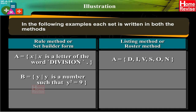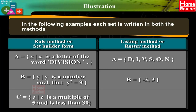In set builder form: B = {y : y² = 9}. In listing method: B = {−3, 3}. In set builder form: C = {z : z is a multiple of 5 and less than 30}. In listing method: C = {5, 10, 15, 20, 25}.